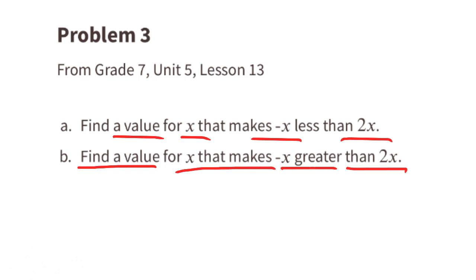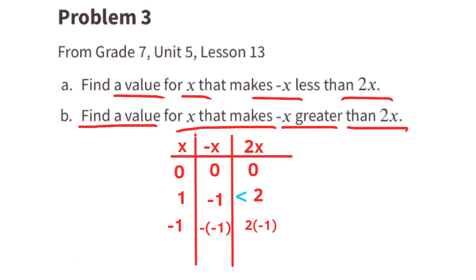Part b: find a value for x that makes negative x greater than 2x. Let's try negative 1. When x is negative 1, negative x is the opposite of negative 1, and 2x is 2 times negative 1. So negative x equals 1 and 2x equals negative 2. Since 1 is greater than negative 2, when x is negative 1, negative x is greater than 2x.